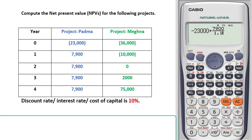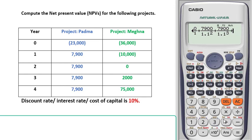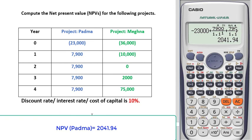You don't need to put one here, but for your understanding I am putting one. For year two we will put two, and this is for year three, and finally this is for year four. So now we have to press this equals sign — just this equals sign. So 2,041.94 is our net present value of project Podda.